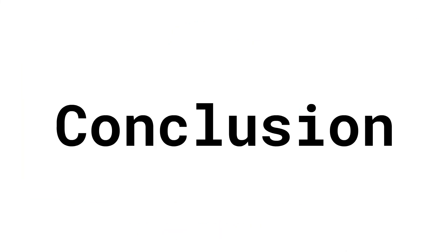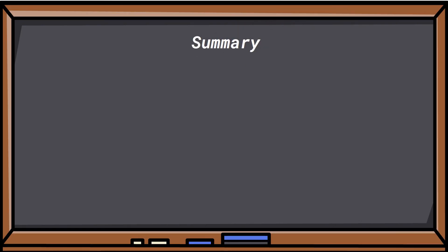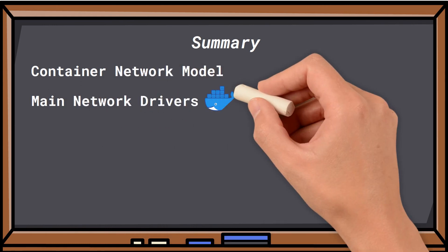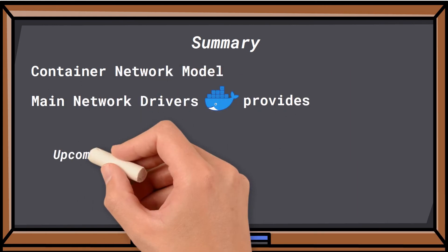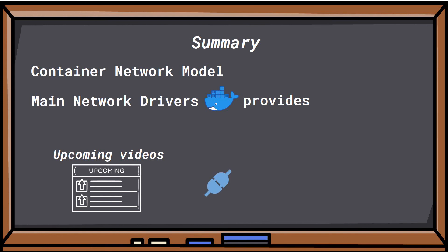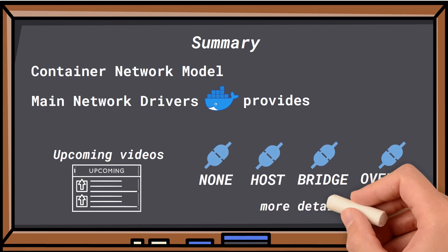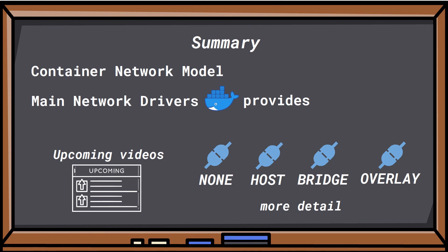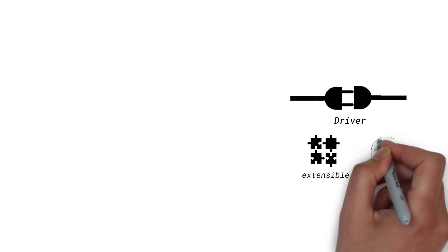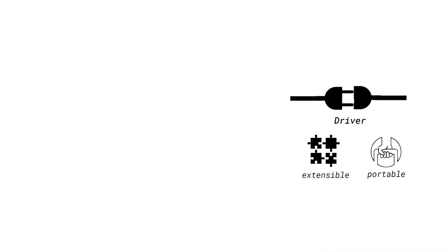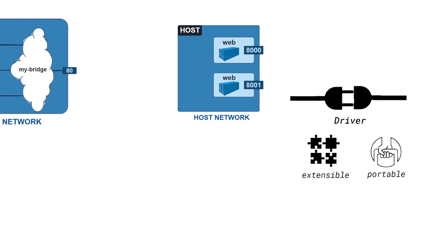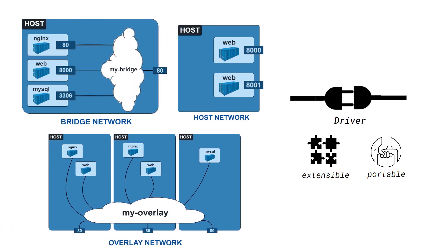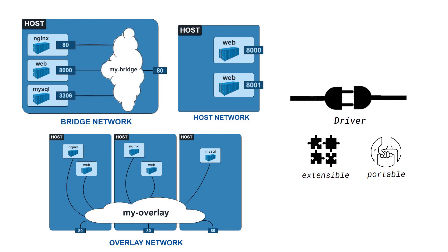Today we briefly learnt about the container network model and the main network drivers that Docker provides. In the upcoming videos of this series, we will explore each of the drivers in more detail. Being pluggable makes drivers highly extensible and portable. As a result, they allow the use of various types of networks and connect containers amongst themselves and with non-Docker workloads as needed.